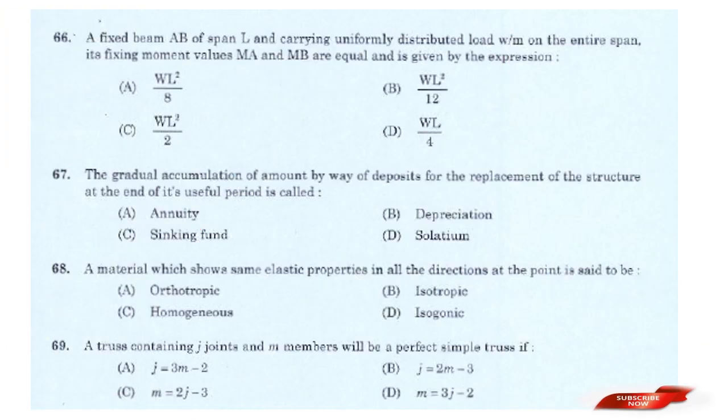Question: For a fixed beam A-B of span L carrying a uniformly distributed load W per meter on the entire span, the fixing moment values MA and MB are equal and given as? Options: WL²/8; WL²/12; WL²/2; WL/4. Answer: Option B — WL²/12.